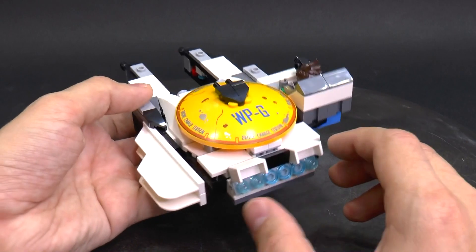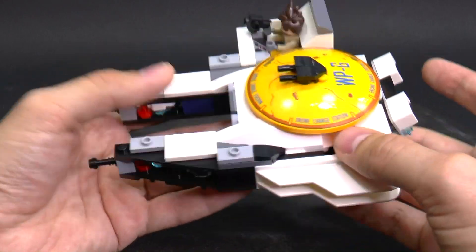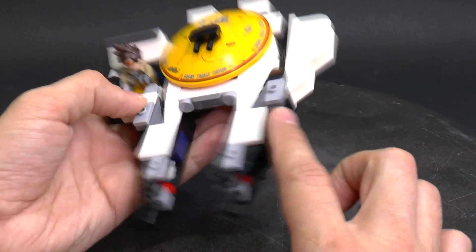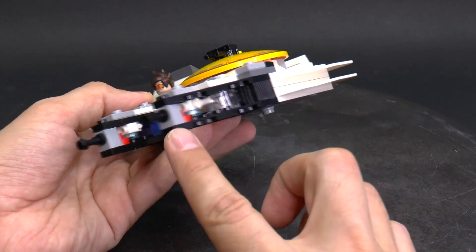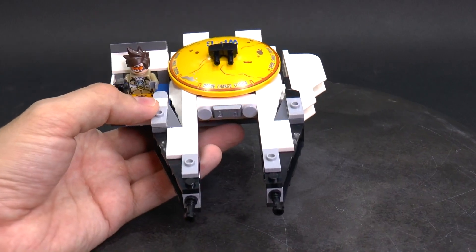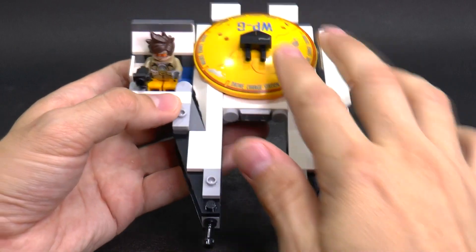The ship looks like Millennium Falcon from Star Wars Universe, so I used these wedge plates on the front of the ship and used this dish on the top.